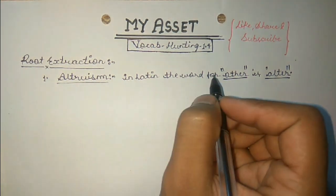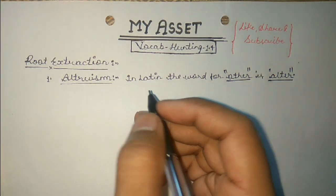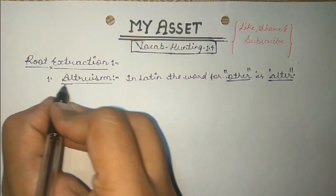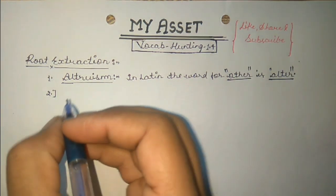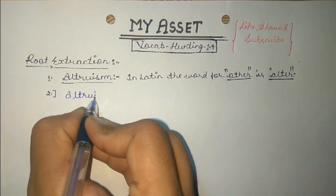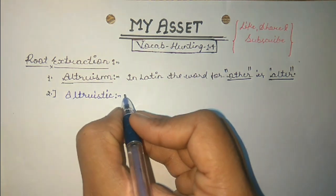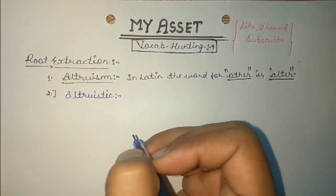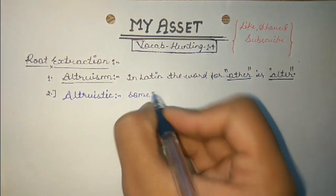In Latin, the word for 'other' is alter, and some valuable words are derived from this root. The first word is altruism, and the second word is altruistic. Altruistic means actions that look towards the benefit of others — some actions which benefit others.